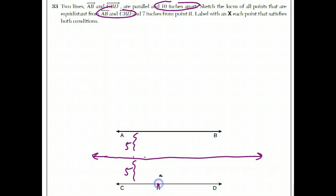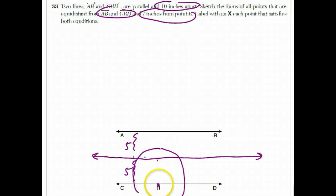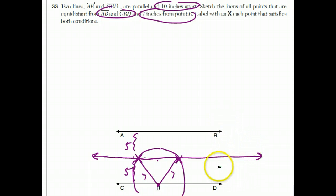Here's point R. All points that are 7 inches away from R form a circle of radius 7. Since the midline is 5 inches from each parallel line and 7 inches would be a bit more, the circle intersects the midline at two points. Those two intersection points are the answer — they satisfy being equidistant from the two lines and exactly 7 inches from point R.